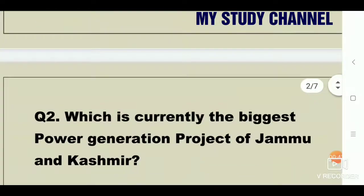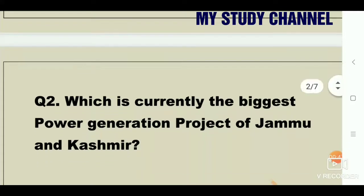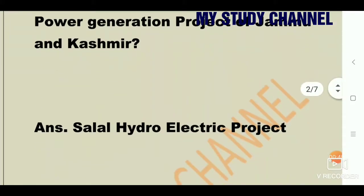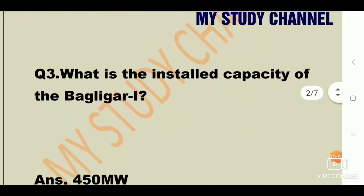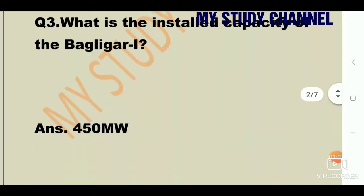Next question: Which is currently the biggest power generation project of Jammu and Kashmir? The answer is Salal Hydro Electric Project. Next question: What is the installed capacity of Baglihar Dam? The answer is 450 megawatt.